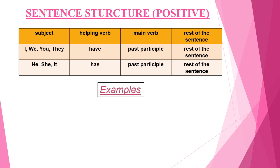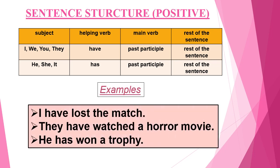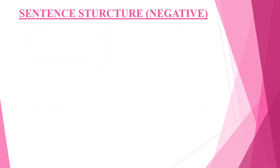Let us look at a few examples of the positive form: 'I have lost the match.' 'They have watched a horror movie.' 'He has won a trophy.' Now let us look at the negative form structure of present perfect tense: subject + helping verb + not + main verb + rest of the sentence.